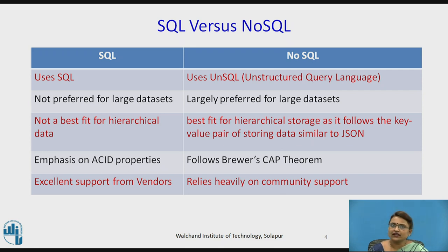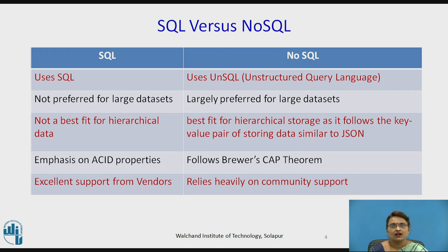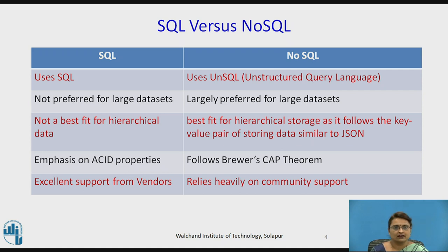SQL does not support large data sets well — the speed of execution, size, and storage matter there. Whereas NoSQL is specially preferred for large data sets. For hierarchical storage, NoSQL is the best fit because it supports key-value pairs and even the JSON format, whereas SQL does not fit for hierarchical data constructs as it supports only tabular data.